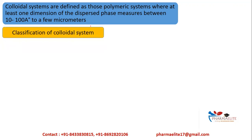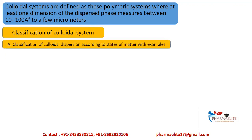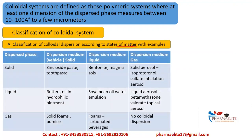There are different ways to classify colloidal systems. The first way is according to their states of matter — whether solid, liquid, or gas. We have the dispersed phase and the dispersion medium (vehicle). The dispersed phase is added into the dispersion medium, which acts as the solvent, though it is not always a liquid.